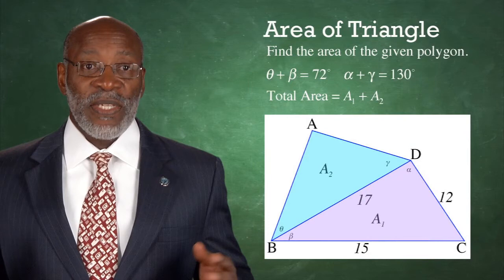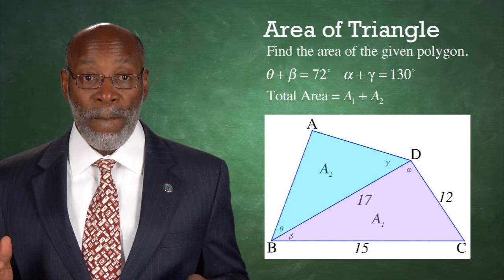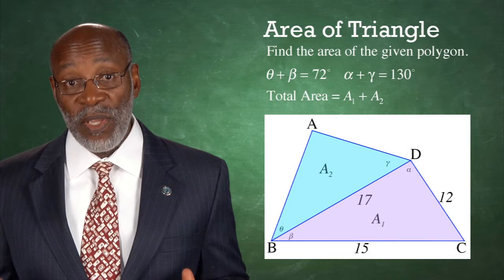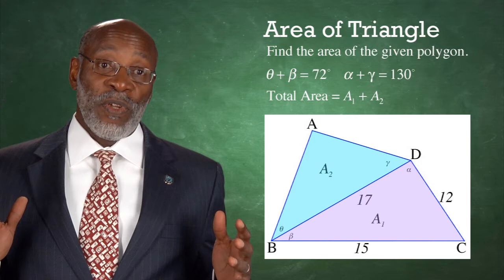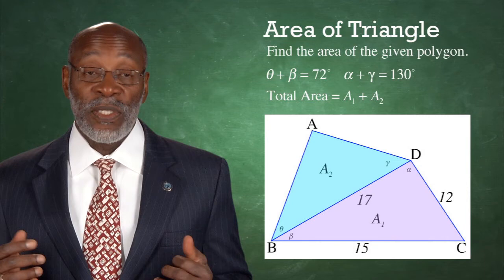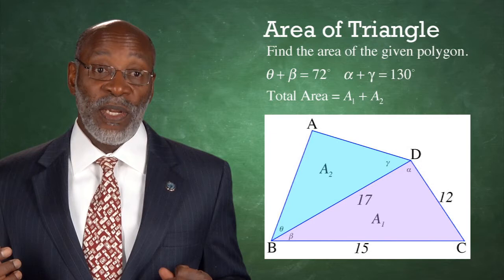Example. Find the area of the given polygon ABCD, where angle theta plus angle beta equals 72 degrees, and angle alpha plus angle gamma equals 130 degrees. Now, whenever you're given a polygon, if we can divide it up into a number of non-overlapping triangles, then the area of the polygon is simply the sum of the areas of the triangles. In this case, we have divided our polygon into two triangles.